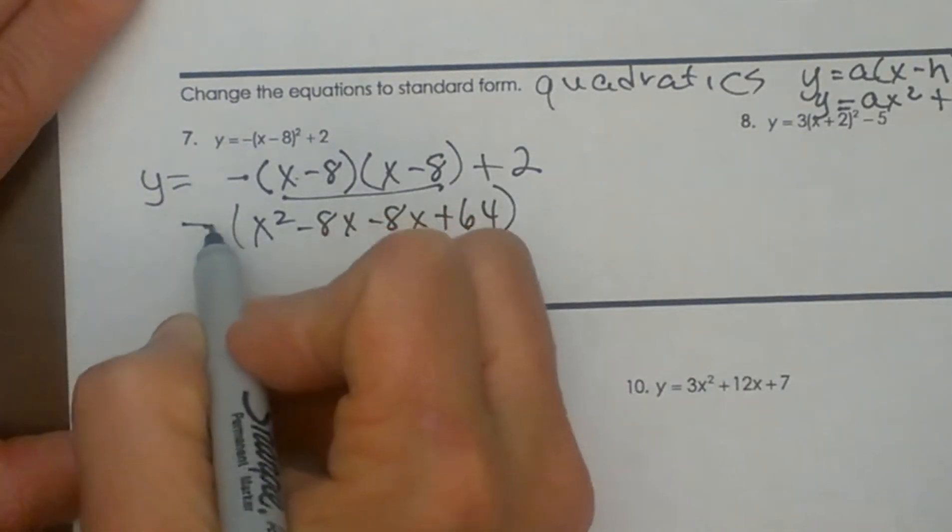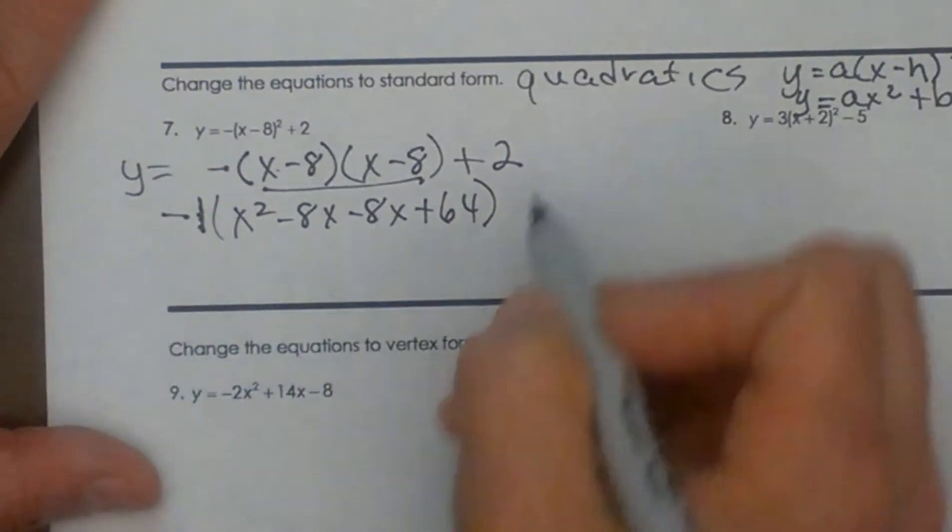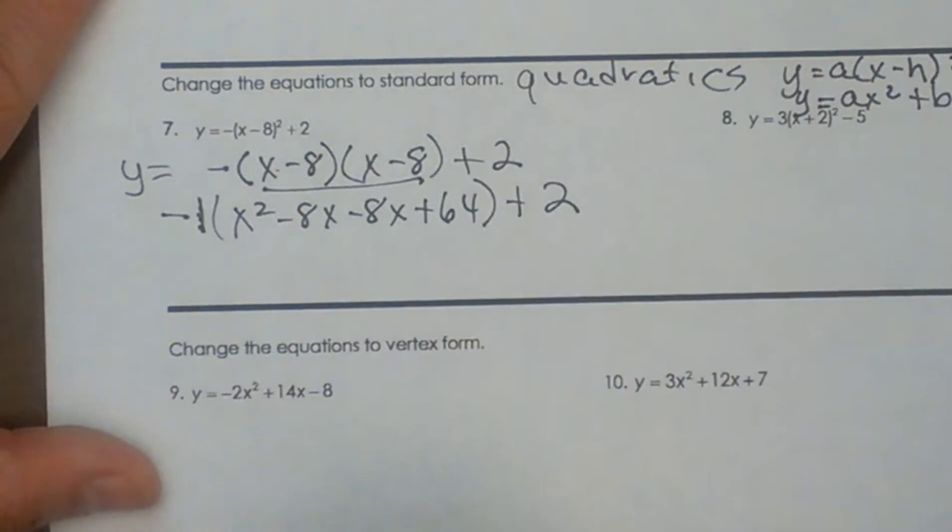All that is being multiplied by a negative, and I'm going to write negative one here so I remember to multiply by that negative. I'm going to bring down my 2.